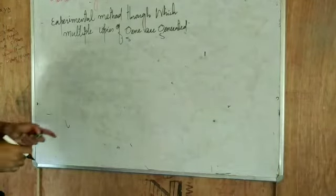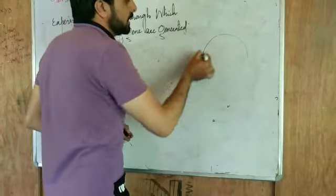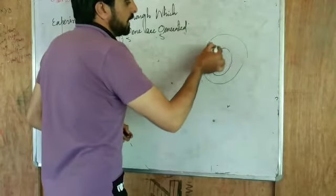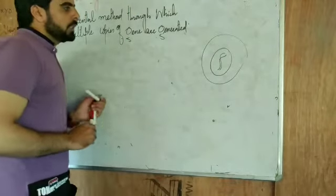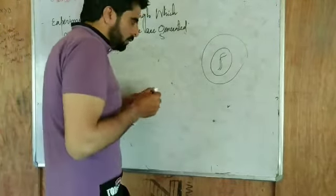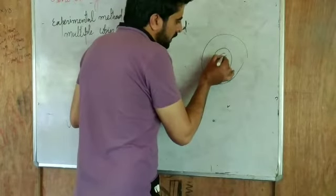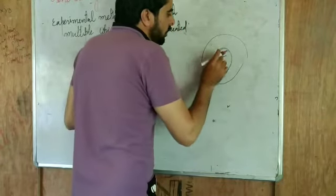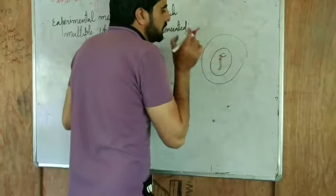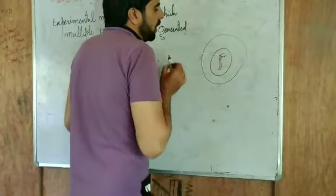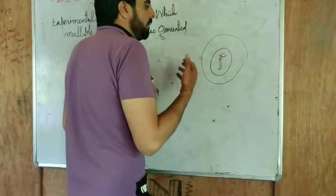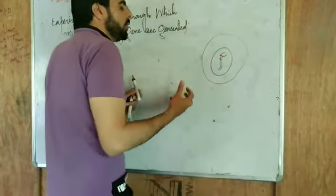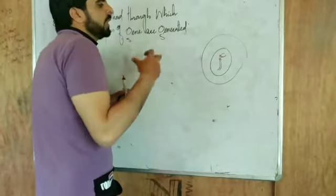Say for instance, if we have a cell here with a nucleus, and within the nucleus we have DNA. This DNA contains the gene of interest. Now you want to have multiple copies of this gene. You can go through the process of gene cloning and make a huge number of copies of this gene, or you can create a gene library.